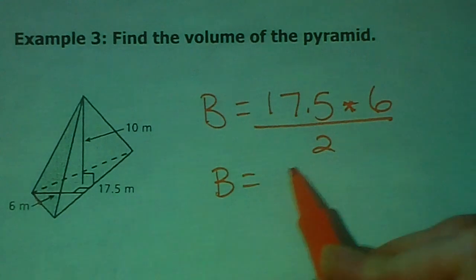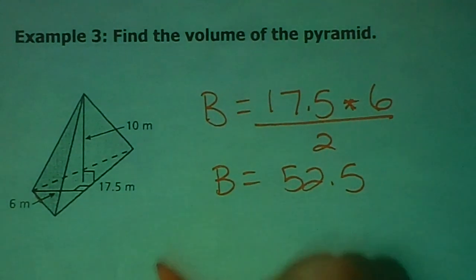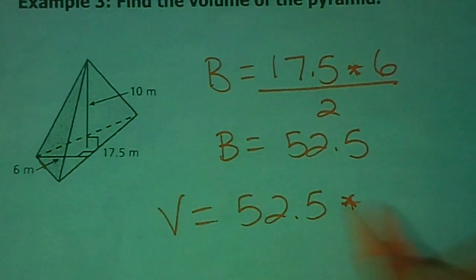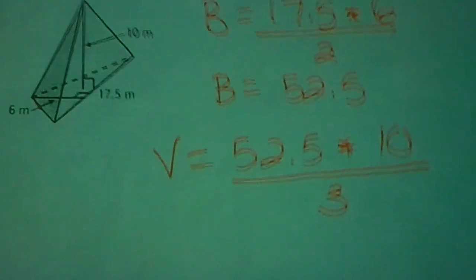I'm not done, because that's just big B. My volume is big B times the height of the pyramid, which is 10, divided all by 3. 3 scoops of oatmeal. All right, punch all that in.